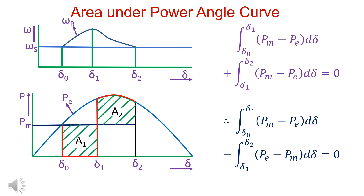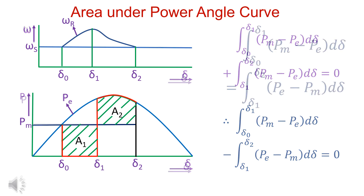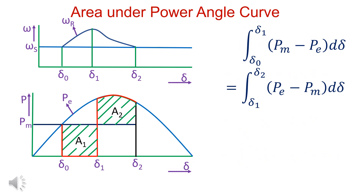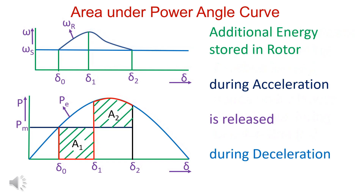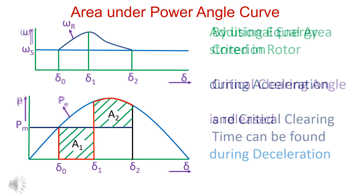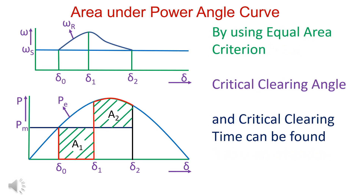Thus, the integral of (PM − PE) from delta_0 to delta_1, minus the integral of (PE − PM) from delta_1 to delta_2, equals 0. Therefore, the integral of (PM − PE) from delta_0 to delta_1 equals the integral of (PE − PM) from delta_1 to delta_2. Thus, area of acceleration A1 equals area of deceleration A2. Energy stored during acceleration is released during deceleration. By using the equal area criterion, the critical clearing angle and critical clearing time are found.